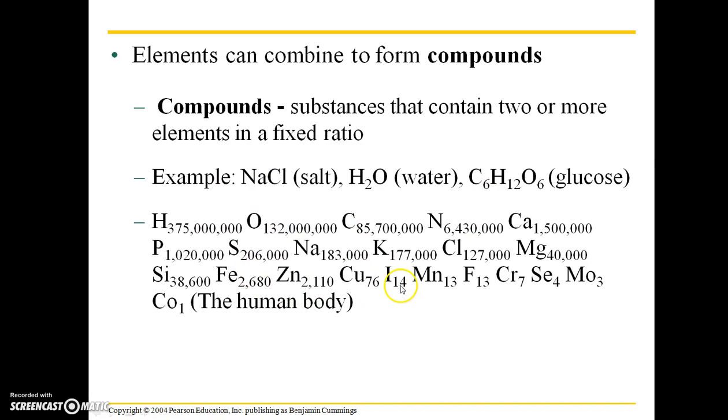This formula right here is the human body. I'm not going to ask you to memorize this, but this just shows, again, that hydrogen, oxygen, carbon, and nitrogen make up the largest portion of our body by weight. Calcium is also a big contributor to that, and these trace elements are also found in the human body.